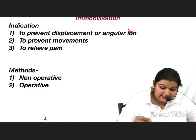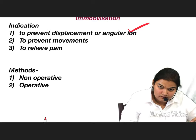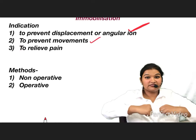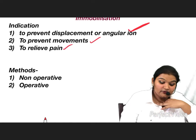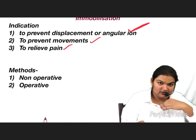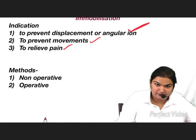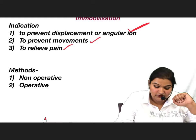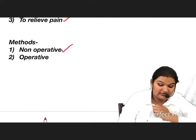The indications for immobilization are: first, to prevent displacement, non-union, and angulation of the fracture; second, to prevent movement between the two fracture ends, which would cause non-union; and third, to relieve pain — continuous movement excites the nerve endings and causes pain.